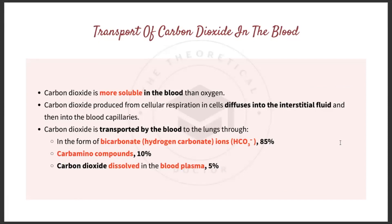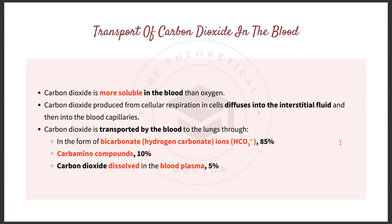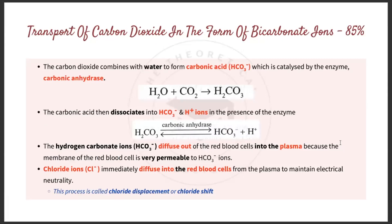Transport of carbon dioxide in the blood: carbon dioxide is more soluble in blood than oxygen. CO₂ produced from cellular respiration diffuses into interstitial fluid and then into the blood capillaries. There are three ways carbon dioxide is transported to the lungs: in the form of bicarbonate (hydrogen carbonate) ions — accounting for 85% — as carbamino compounds (10%), and dissolved in blood plasma (5%).